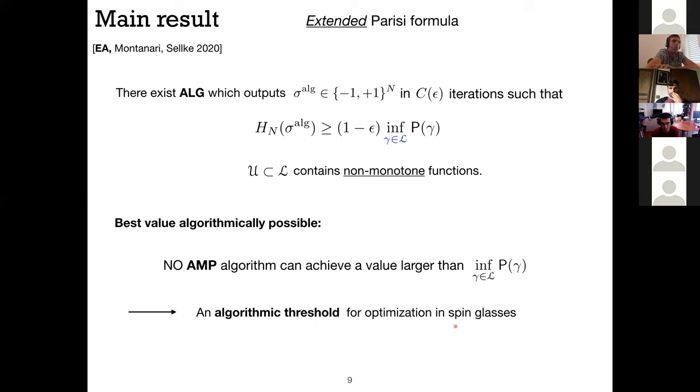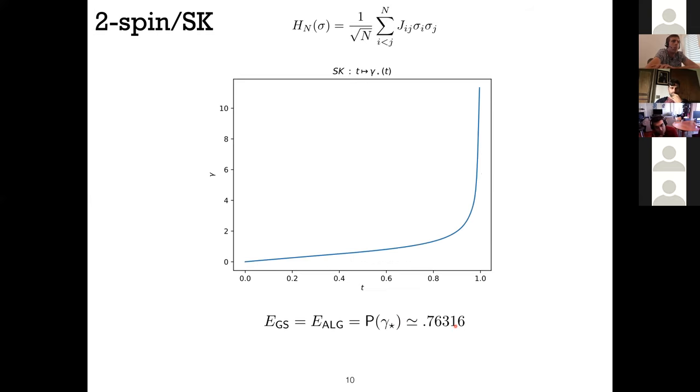So you can try to discretize these problems and solve them numerically. If you look at the two-spin model and you solve either one, if you solve this extended Parisi formula or the ground state one, then you find that the optimal gamma will be just strictly increasing, meaning that this non-decreasing constraint that you put in the original problem is not active. So if you solve either one, you'll always find an increasing function. And this is a conjecture, this is a famous conjecture in mathematical physics, but there is no overlap gap for the SK model. That means that the ground state energy is the energy that is achieved by your algorithm, which is given approximately by this value.